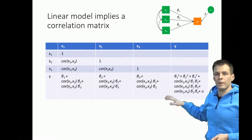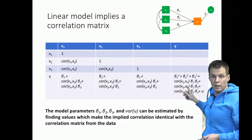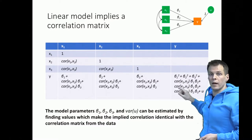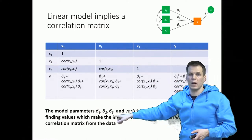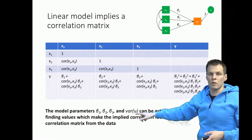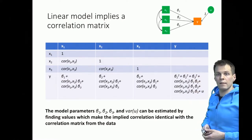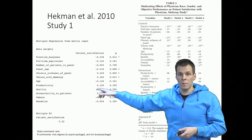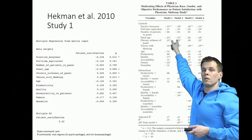Why would this principle be useful? If we know the correlation matrix from the data, we can actually calculate the regression estimates by working backwards. We know the correlations in the data and can find out what set of regression coefficients beta 1, beta 2, and beta 3, and the variance of the error term, would be compatible with this correlation matrix. So we find the model parameters that produce this implied correlation matrix.